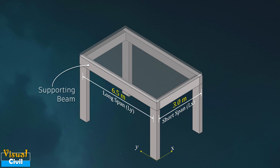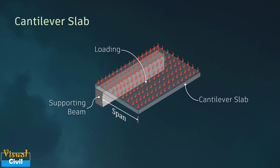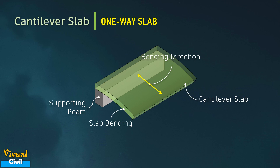Let us extend the slab outside the beam to make it a cantilever. Applying uniformly distributed load to the cantilever slab, this cantilever slab bends only in one direction — that is, along the cantilever span. Hence, the cantilever slab is also a one-way slab.